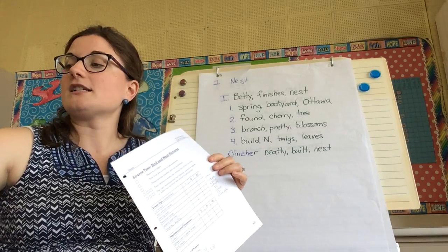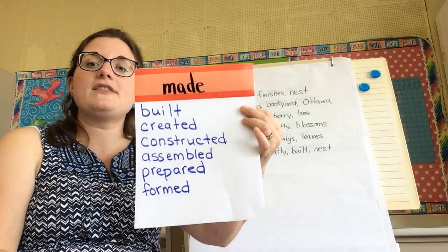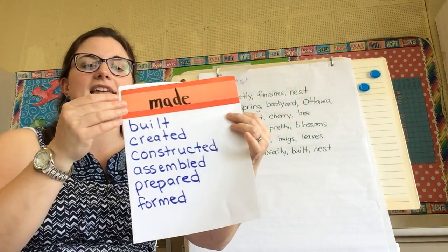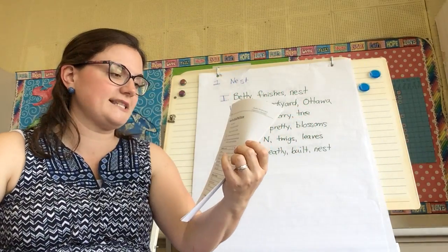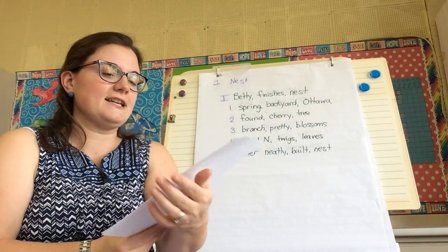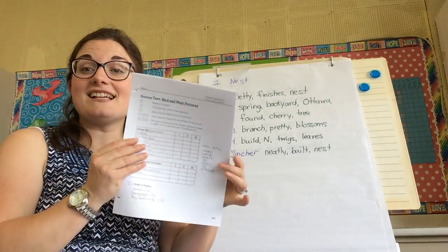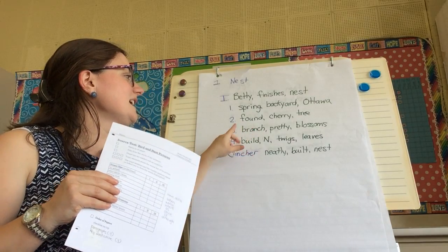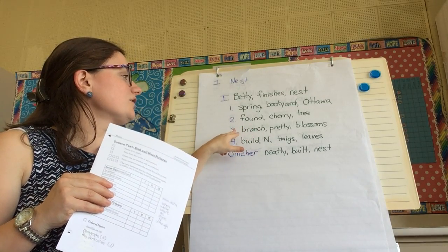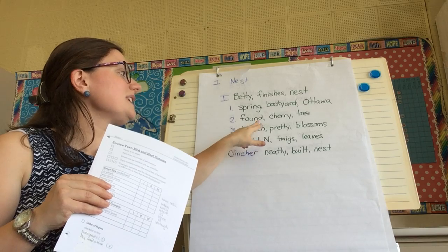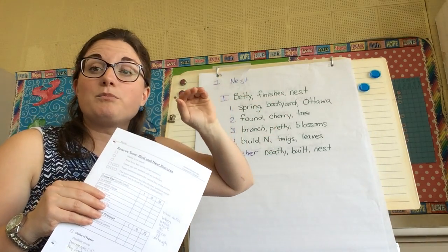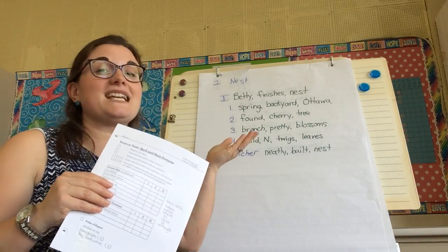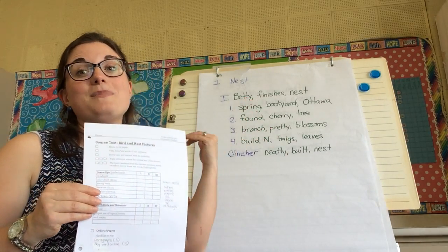Strong verb. We already talked about we're going to use any of these words. Find another word for the word made a nest and that can be your strong verb. However you want to say built, constructed a nest. Because clause. I'm going to say Betty built her nest on the branch because there were pretty blossoms. So she's going to build on the cherry tree because there were pretty blossoms.